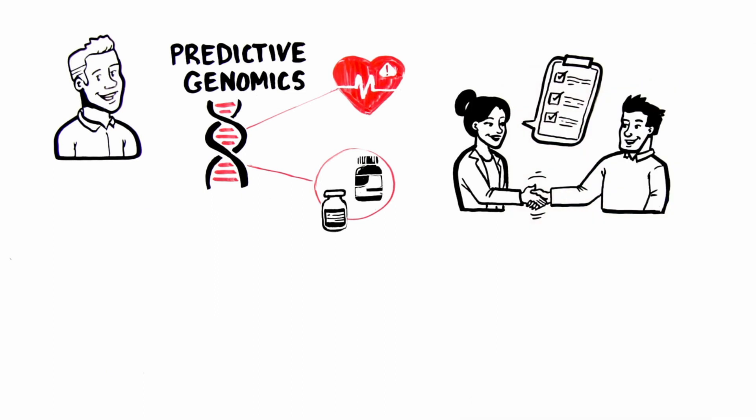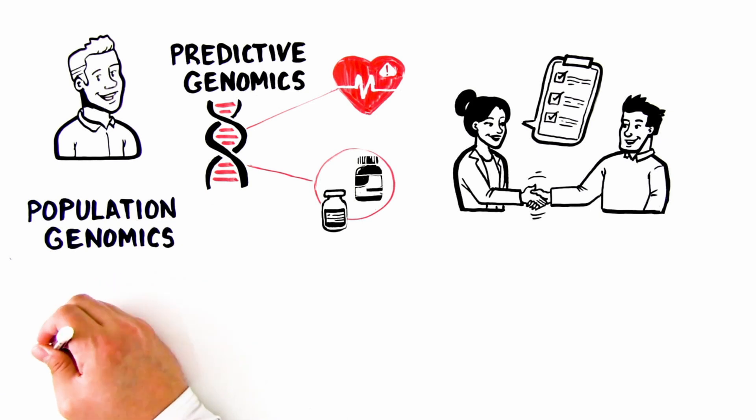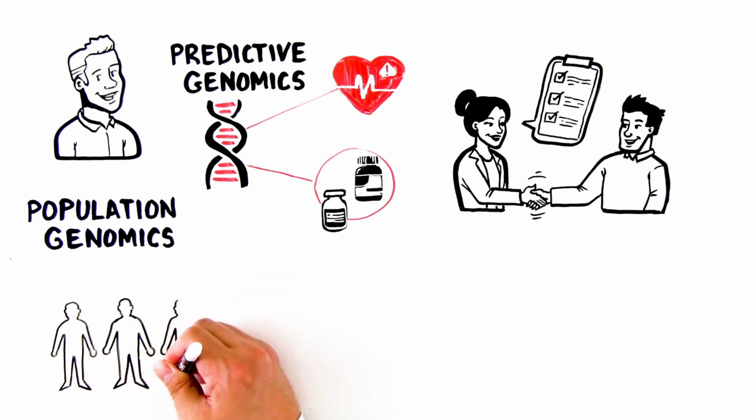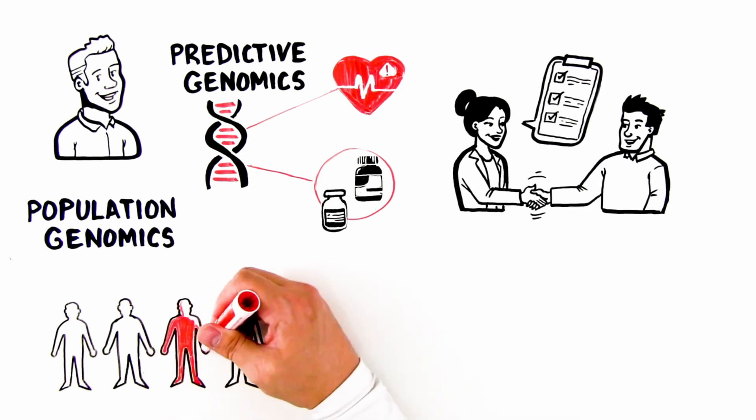The foundation of predictive genomics is population genomics. Population genomics initiatives compile the genomic and health and disease information from large populations to identify patterns of gene variants associated with specific diseases.